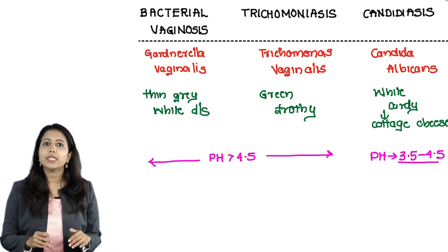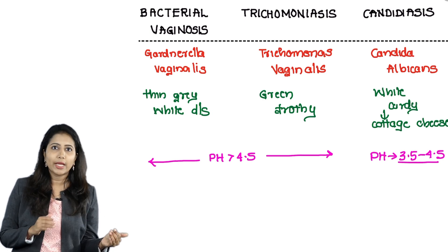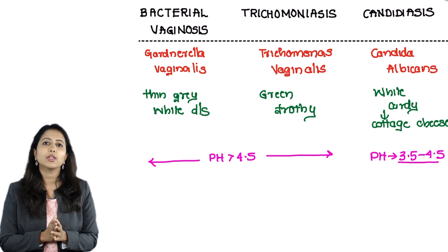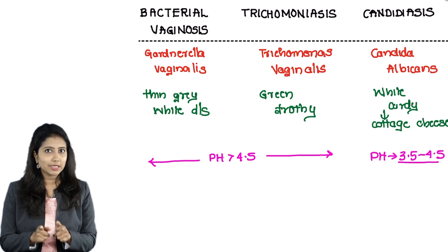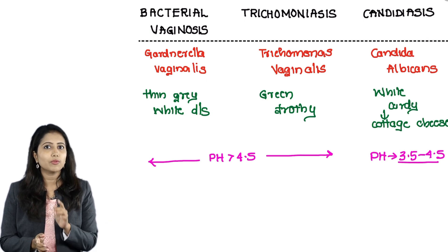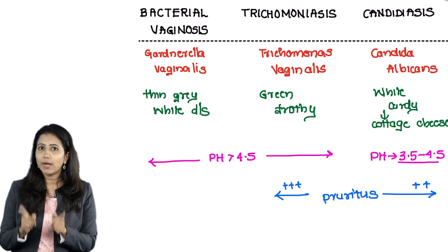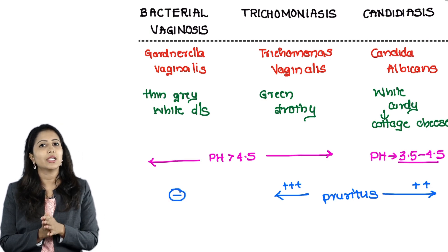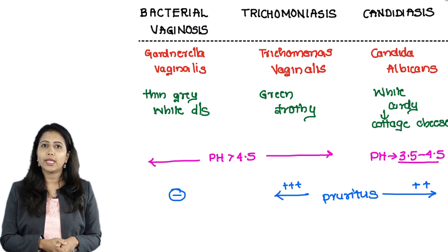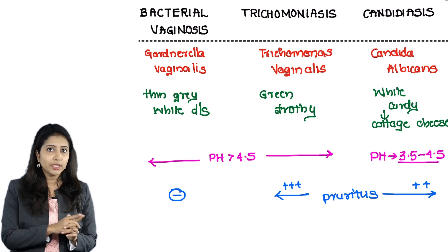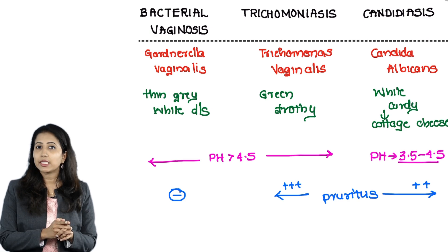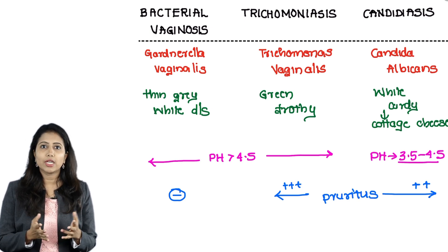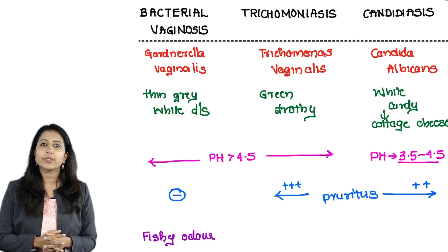In candidiasis the pH is less than 4.5, whereas in bacterial vaginosis and trichomonas the pH is going to be more than 4.5. Pruritus is a typical symptom seen in trichomonas and candidiasis, but pruritus is characteristically absent in bacterial vaginosis. Please note that. Along with that, though pruritus is not present, bacterial vaginosis has a typical foul-smelling discharge — a fishy odor which is typically seen.